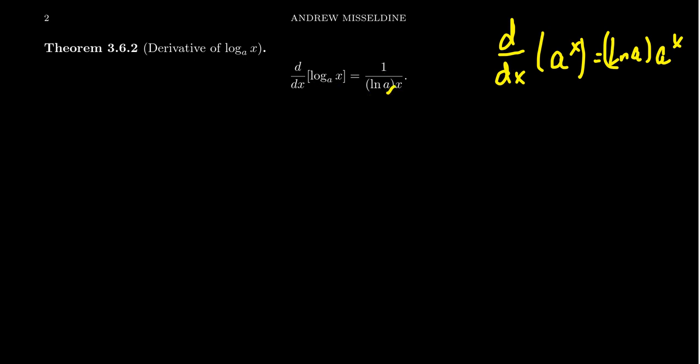If you remove the natural log of a, this looks just like the derivative of the natural log — just 1 over x. But there's a price to pay: a natural log of a, that tariff has to be paid. For exponentials, you multiply by the tariff; for logarithms, you divide by the tariff. Logarithms and exponentials are inverse operations, so it comes as no surprise that the tariffs are also inverse operations — one is multiplication, one is division.